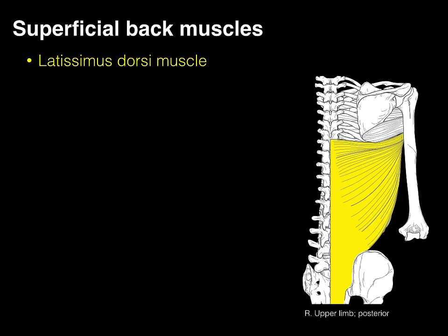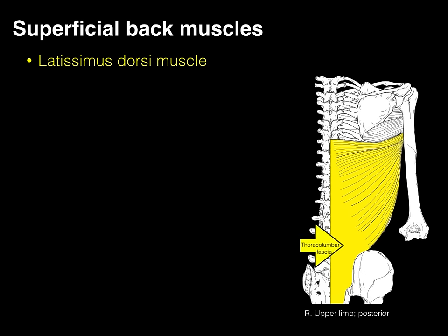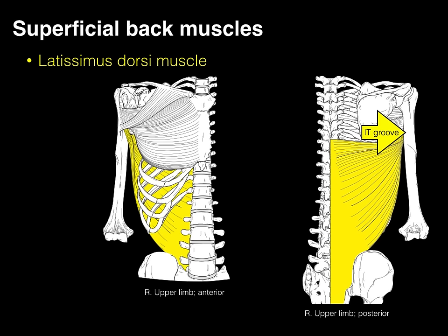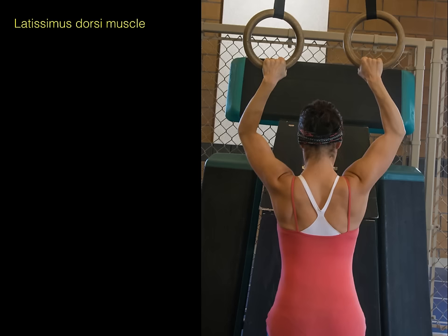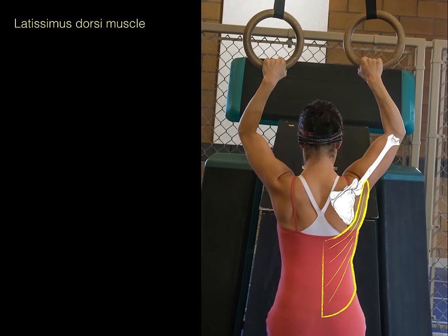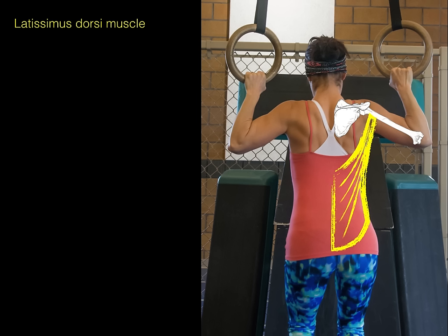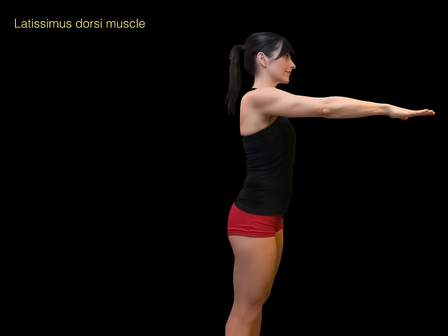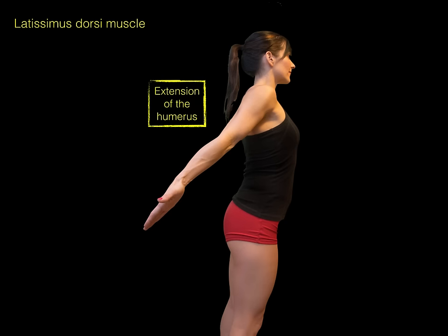The final muscle is the latissimus dorsi — latissimus means broad, dorsi means of the back. This muscle arises from T7 all the way down to the sacral region of the vertebral column through the thoracolumbar fascia, and those muscle fibers course up to the anterior surface of the humerus at the intertubercular groove, between the greater and lesser tubercles. When this muscle contracts, it pulls the humerus down — adduction of the humerus — and also moves the humerus from a flexed to an extended position — extension of the humerus.